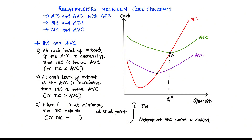Next, when the average variable cost is at its minimum, the marginal cost cuts the average variable cost at that point, meaning MC equals AVC. This point is called point B. At point B, the AVC is at its minimum — it was decreasing and then starts to increase, so the point between the decreasing and increasing portions is the minimum. At this minimum point B, the marginal cost is exactly equal to the average variable cost, and this point is called the shutdown point.